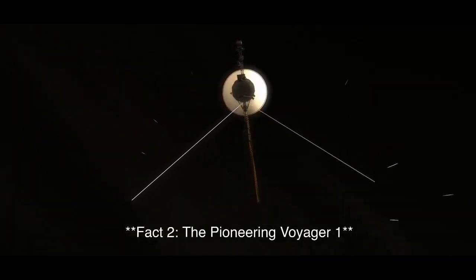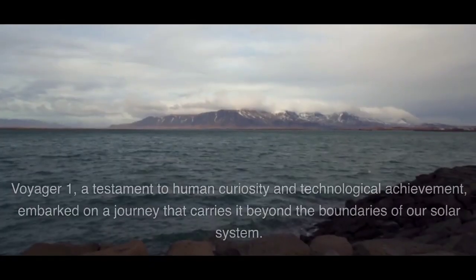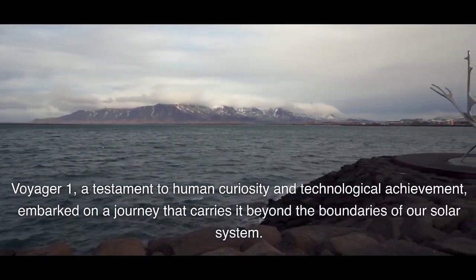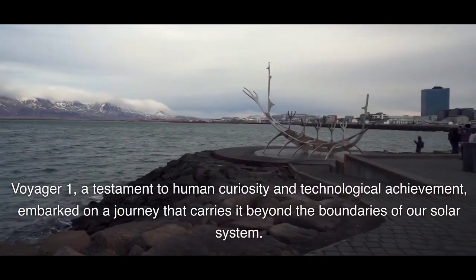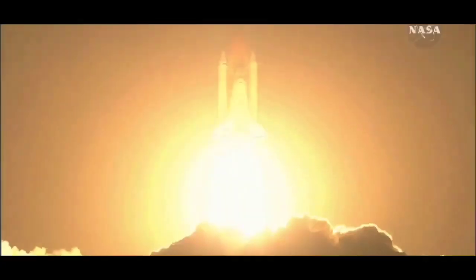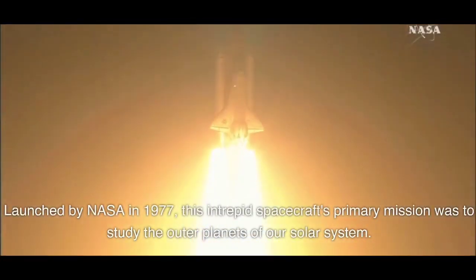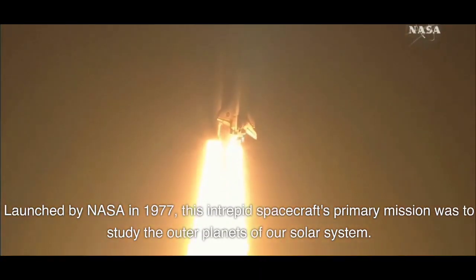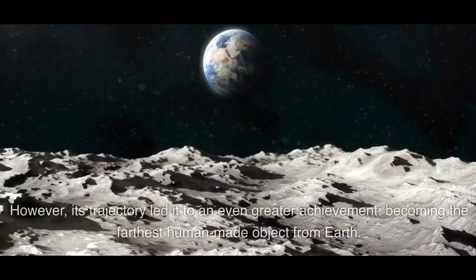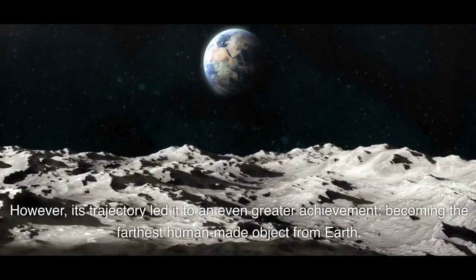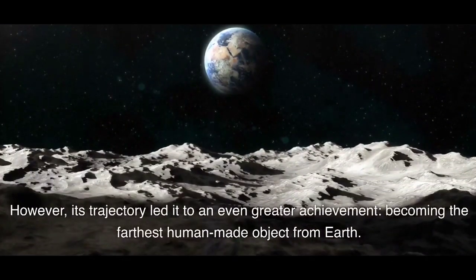Fact 2, The Pioneering Voyager 1. Voyager 1, a testament to human curiosity and technological achievement, embarked on a journey that carries it beyond the boundaries of our solar system. Launched by NASA in 1977, this intrepid spacecraft's primary mission was to study the outer planets of our solar system. However, its trajectory led it to an even greater achievement, becoming the farthest human-made object from Earth.